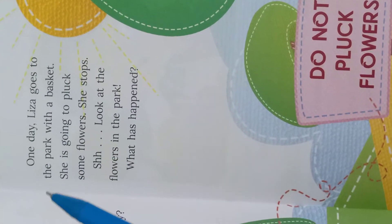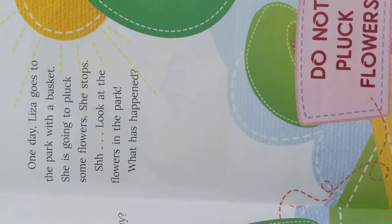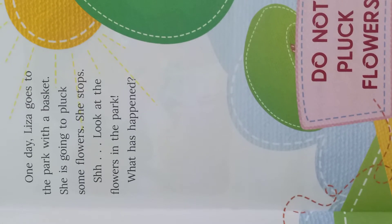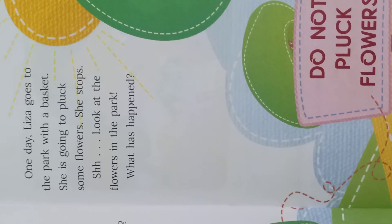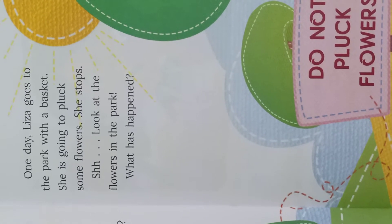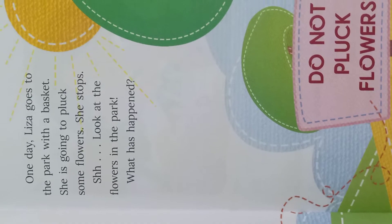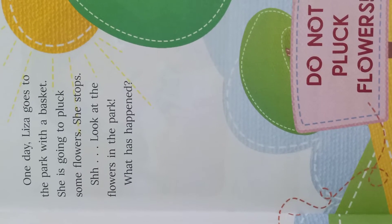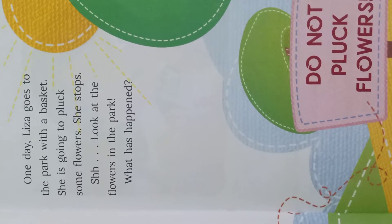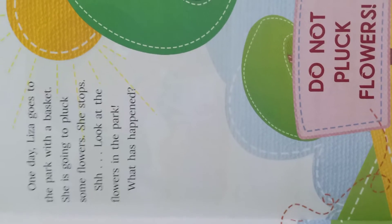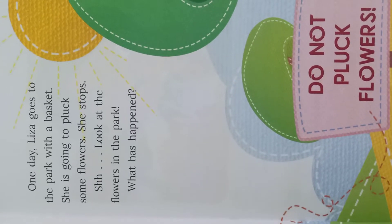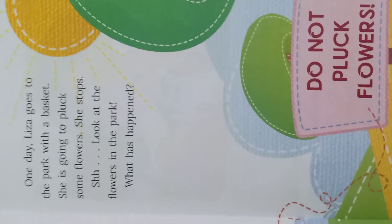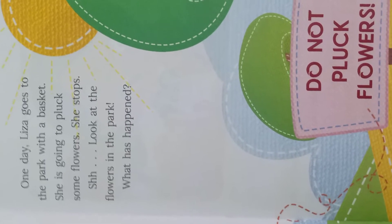She puts them in a vase in her room — और उसके रूम में एक vase यानि कि फूलदान रखा था, जिसके अंदर वो उन फूलों को डाल कर सजा देती थी। She plucks flowers wherever she sees them — पार्क में जहां भी उसे flowers दिखते, वो उनको तोड़ लेती थी। One day Lisa goes to the park with a basket — एक दिन Lisa पार्क में अपनी एक टोकरी के साथ गई, ताकि वो उसके अंदर flowers ला सके। She is going to pluck some flowers — वो कुछ फूल तोड़ने जा रही थी।